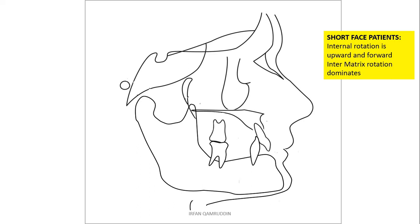However, the other patient had short face and she had intramatrix anti-clockwise rotation dominating. That has led to short face, dental deep bite, competent lips, prominent chin. These are the features you see in your class 2 division 2 type of patients.